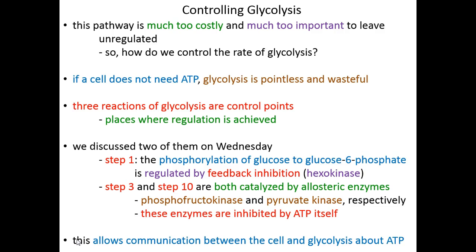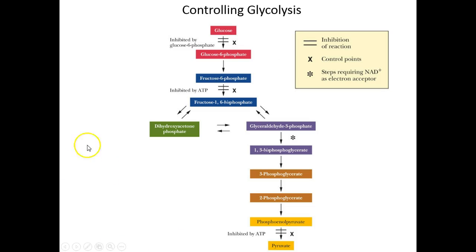This regulation allows communication between the cell at large and glycolysis, all focusing on ATP levels. If ATP levels are low, all enzymes are active and pyruvate is made. If ATP levels are high, step 10 shuts down so pyruvate will no longer be made, step 3 shuts down so fructose-1,6-bisphosphate will no longer be made, which backs up fructose-6-phosphate, then glucose-6-phosphate, which ultimately shuts down step 1 and glycolysis is off. The textbook figure shows three regulation points — steps 1, 3, and 10 — with steps 10 and 3 inhibited by ATP, and step 1 inhibited by glucose-6-phosphate. We also see our one redox reaction at step 6.